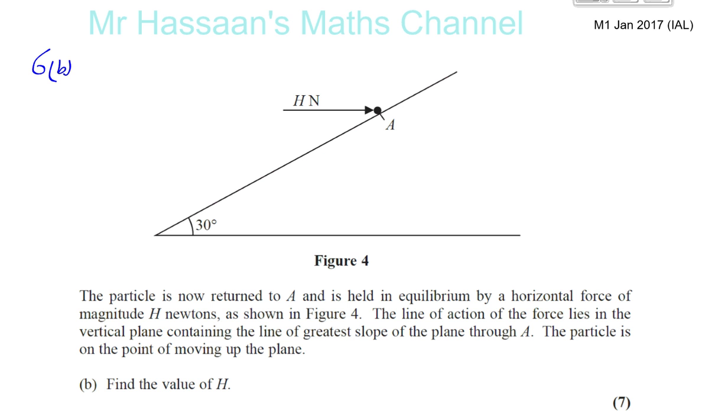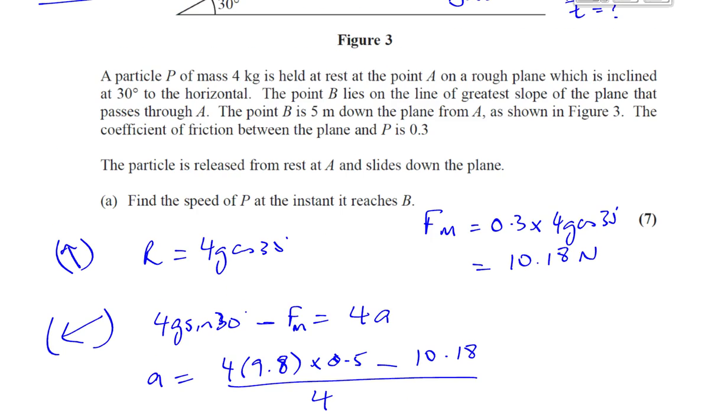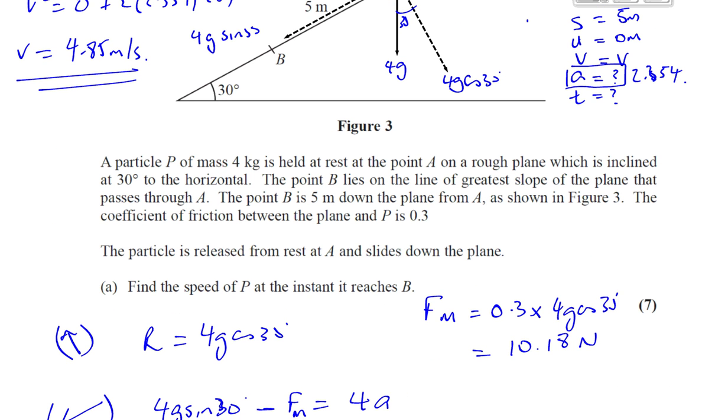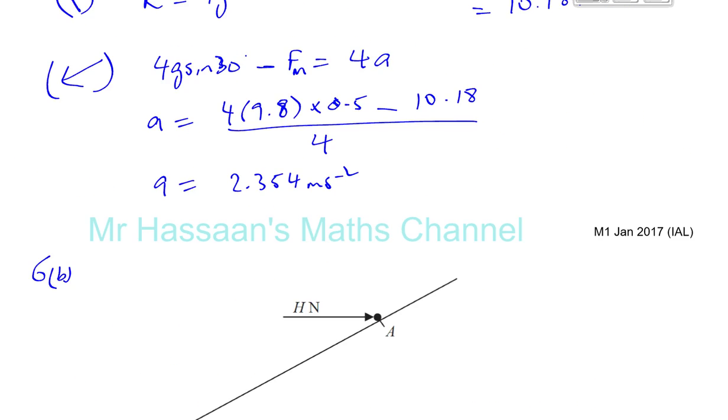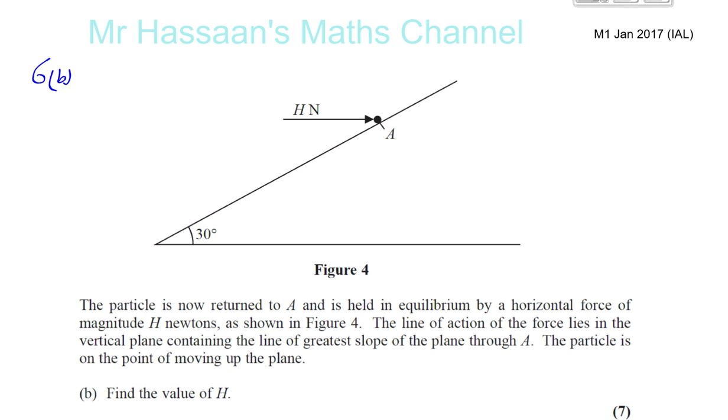The particle is now returned to A and is held in equilibrium by a horizontal force H newtons, as shown in figure 4. We know that friction is still acting. It's the same plane, and the coefficient of friction was 0.3. So we know that the coefficient of friction is 0.3.